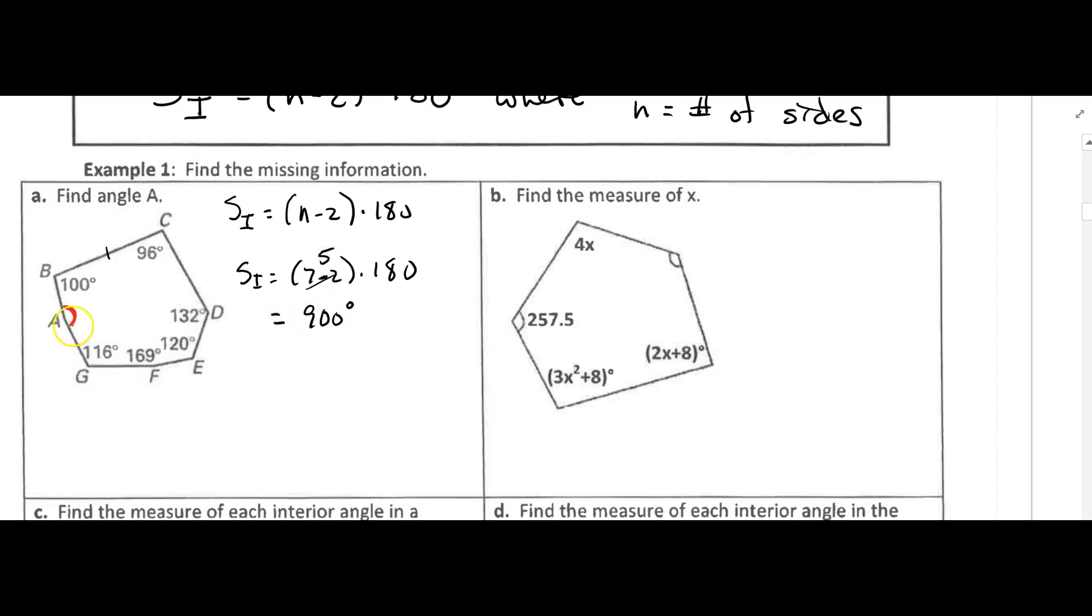So we know that all 7 angles have to add up to 900 degrees, and we're given 6 of the 7 angles.